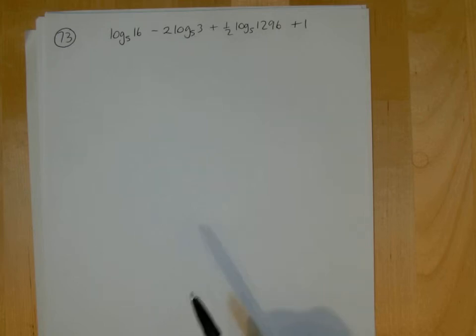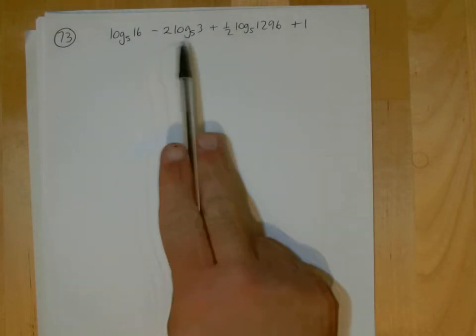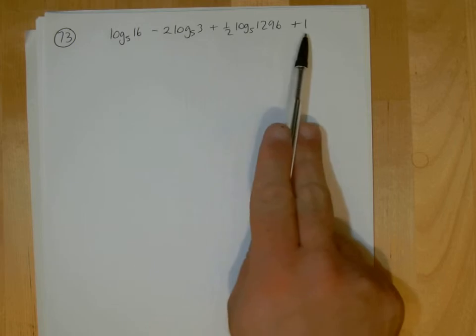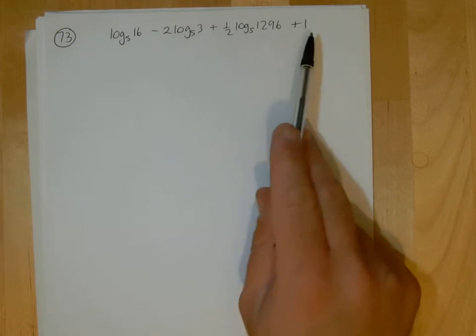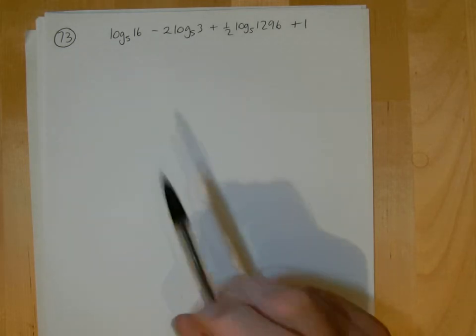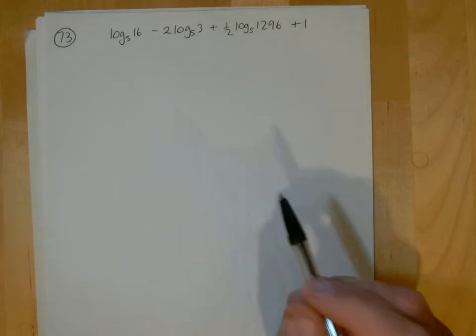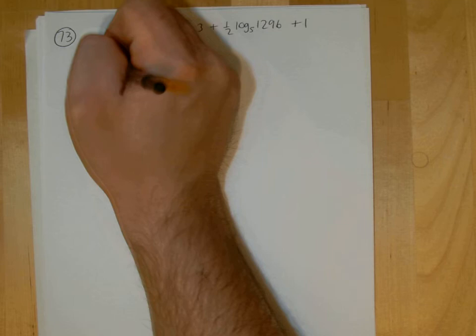Okay, this question says write as a single logarithm. We've already got three logarithms defined there, and then we've got this plus one at the end. I want to try and think about maybe writing that as a logarithm, because one is a special sort of logarithm.